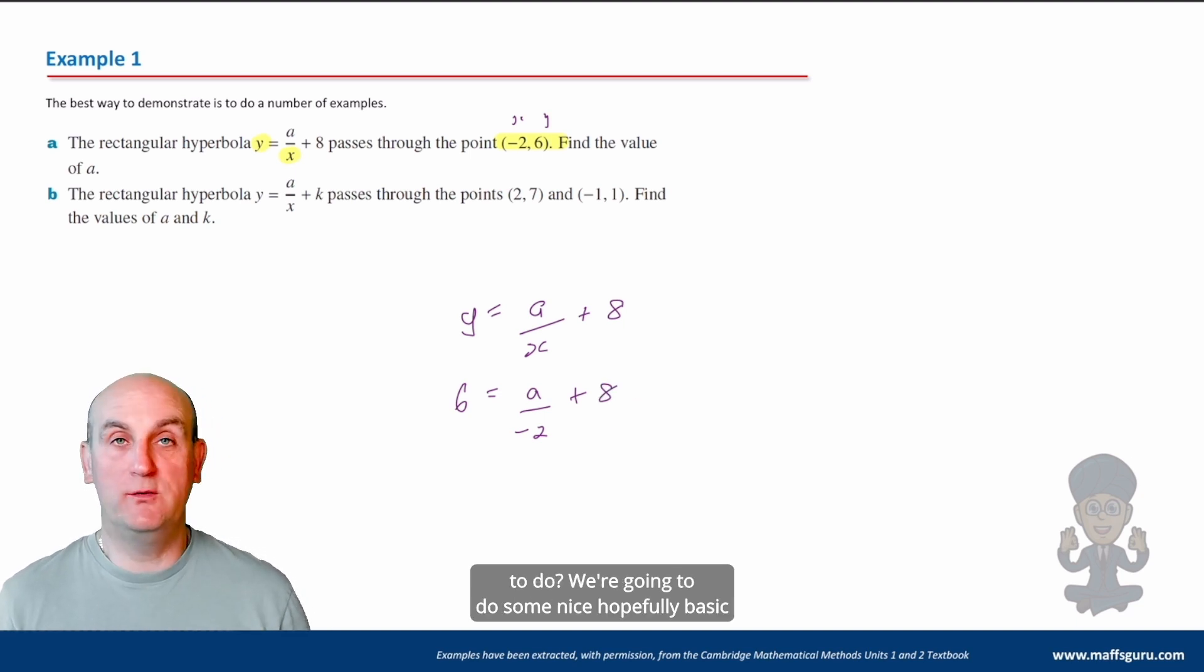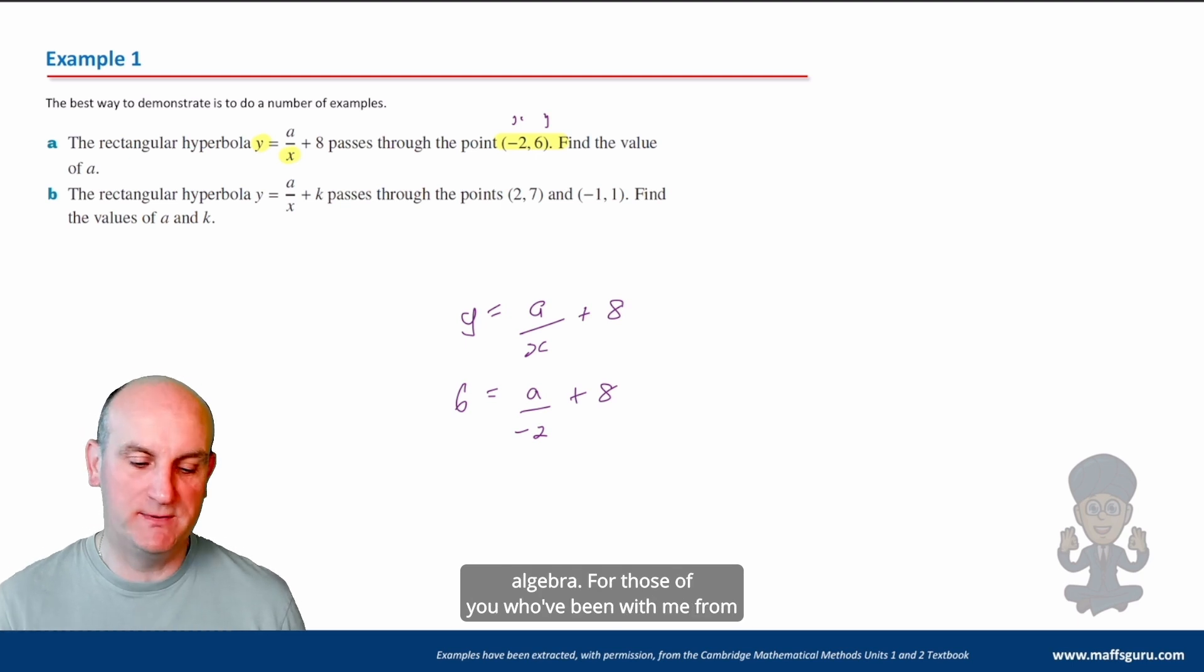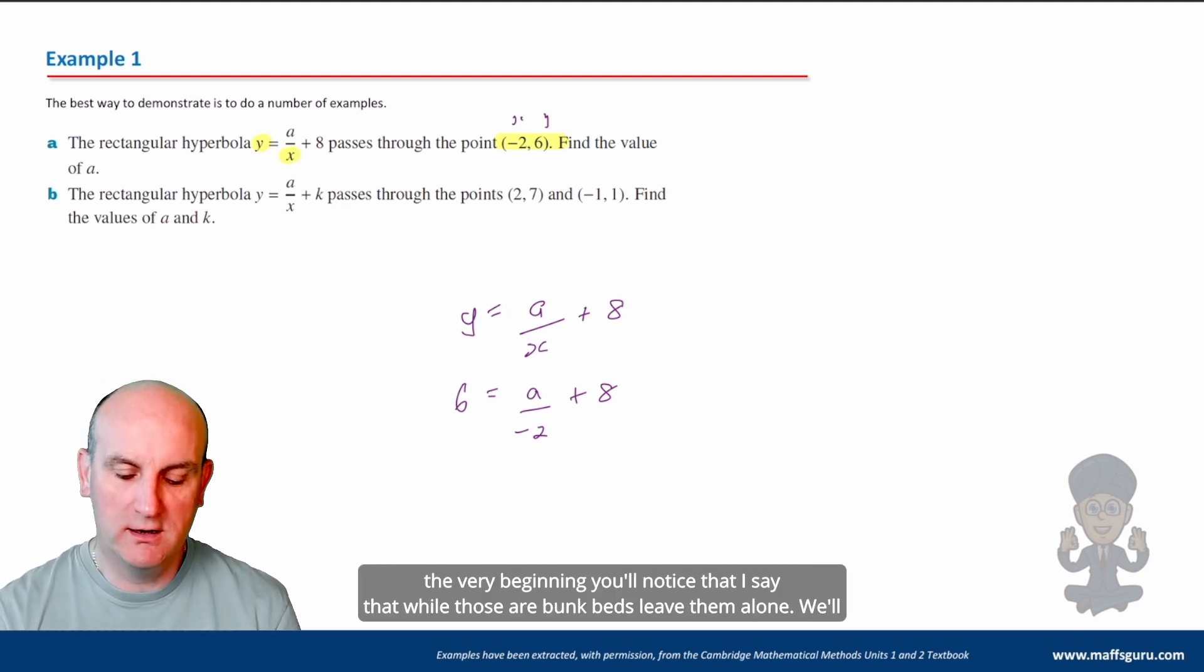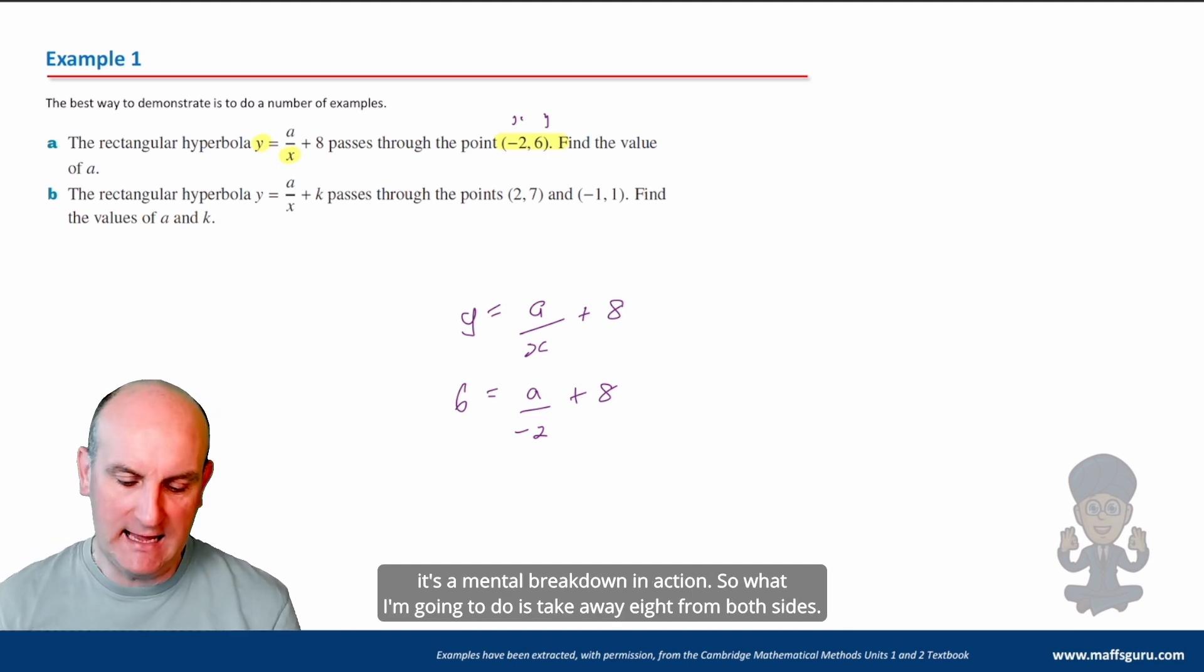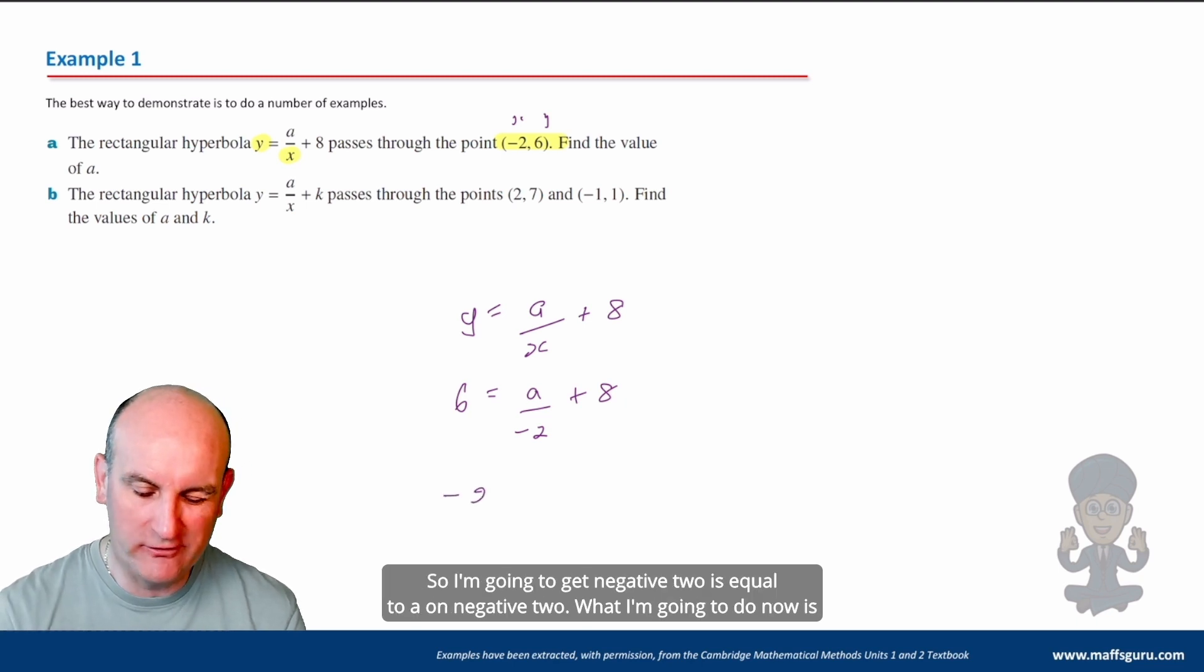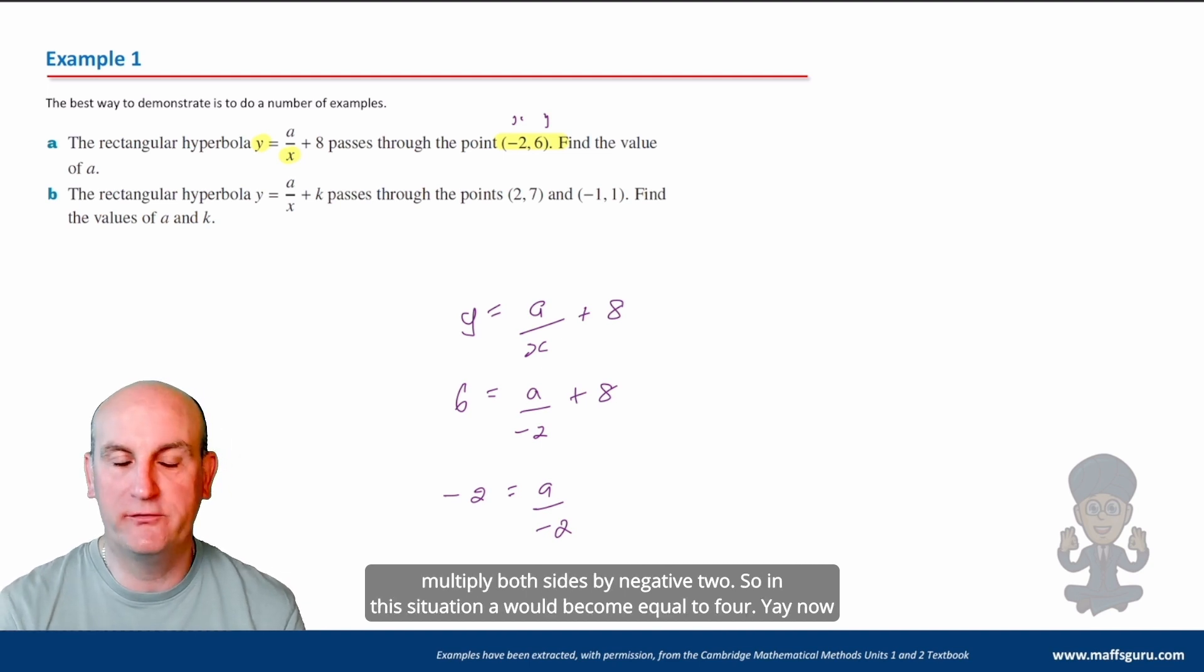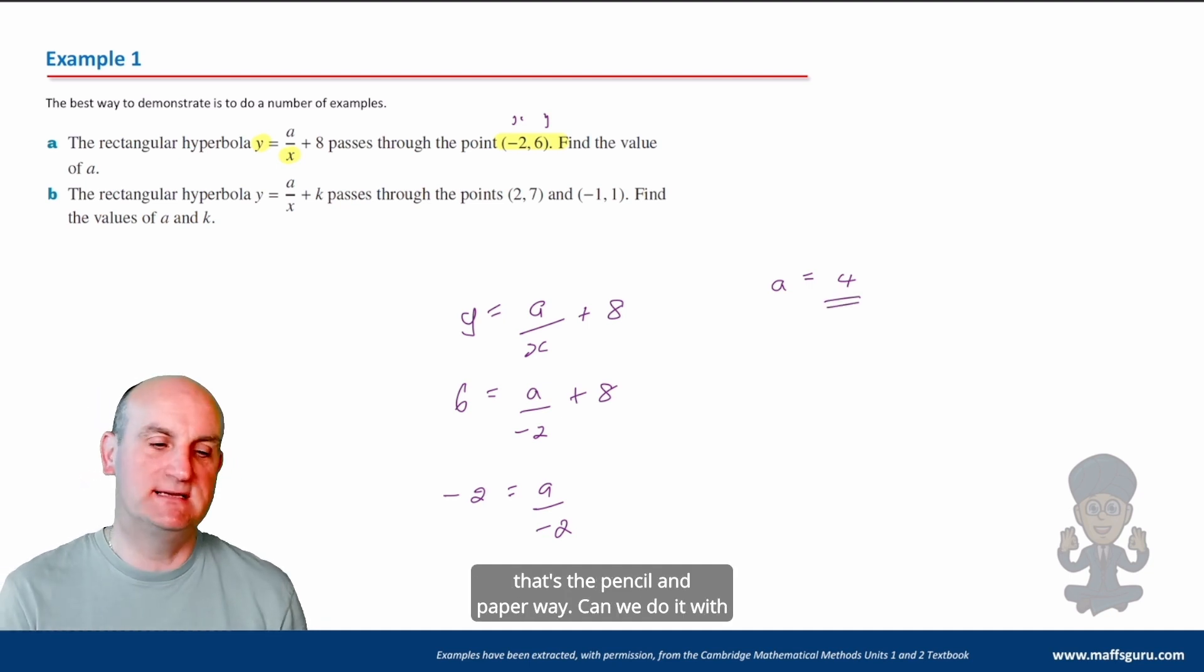In this situation, what are we going to do? We're going to do some nice, hopefully basic algebra. For those of you who've been with me from the very beginning, you'll notice that I say that, well, those are bunk beds. Leave them alone. We'll get rid of the middle of the loner. If you've got no idea what I'm talking about, I'm so sorry. It's a mental breakdown in action. So what I'm going to do is take away 8 from both sides. So I'm going to get negative 2 is equal to a on negative 2. What I'm going to do now, multiply both sides by negative 2. So in this situation, a would become equal to 4. Yay. Now that's the pencil and paper way.